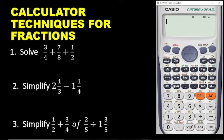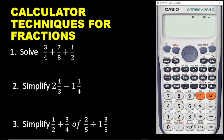Now let's go for the third question. We have: simplify 1 on 2 plus 3 on 4 of 2 on 5, divided by 1 whole number 3 over 5. Now, once again, your calculator actually deals with natural display and so it follows the BODMAS principle. You want to enter exactly this equation correctly — the rest, you are good to go, and you are going to get the right figures.